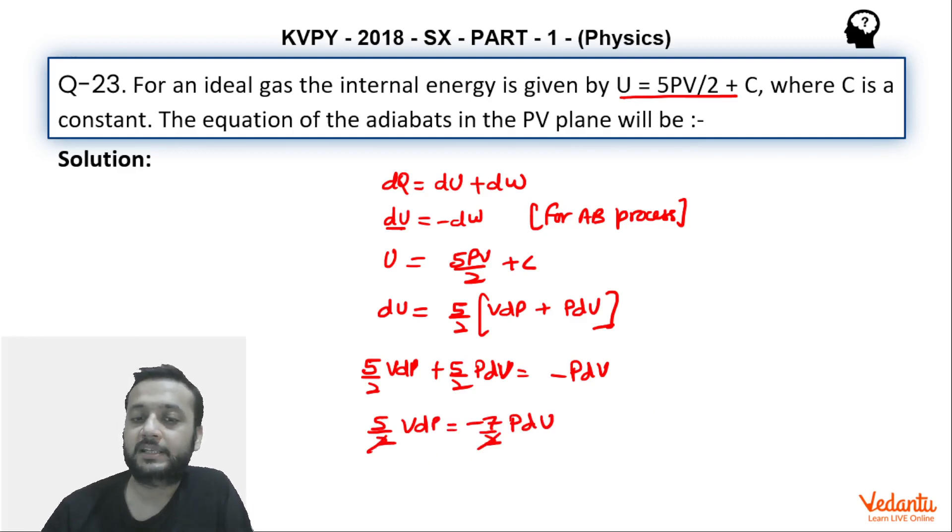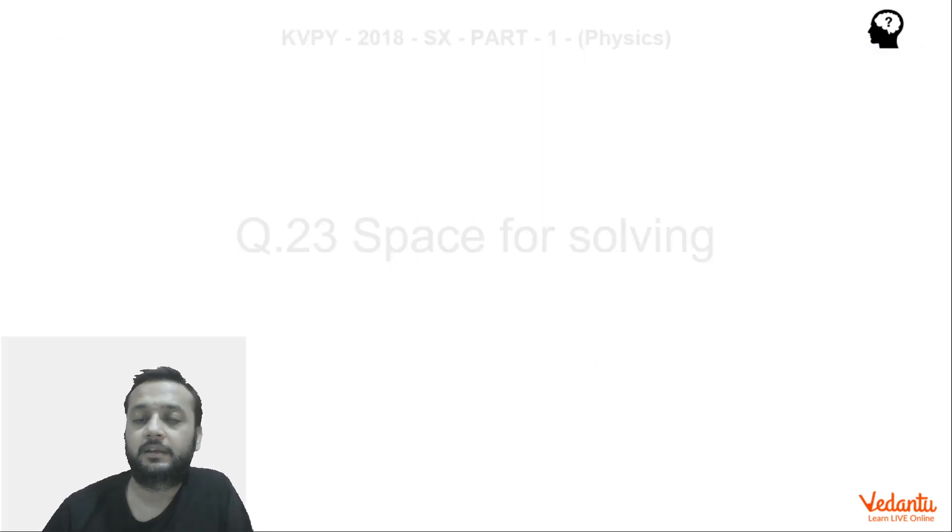Next slide we integrate. dP/P is equals to minus 7/5 dV/V, okay. So dP/P is equals to minus 7/5 dV/V. If you know, this is acting as a gamma.